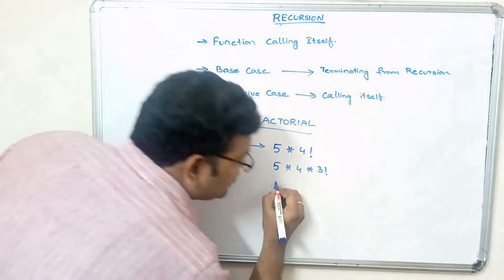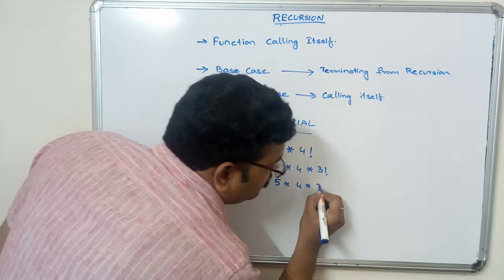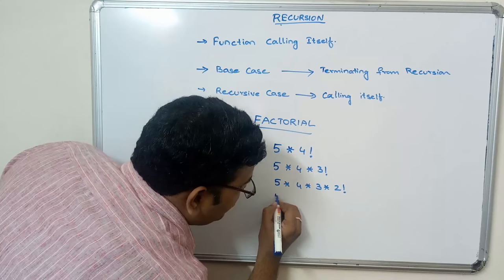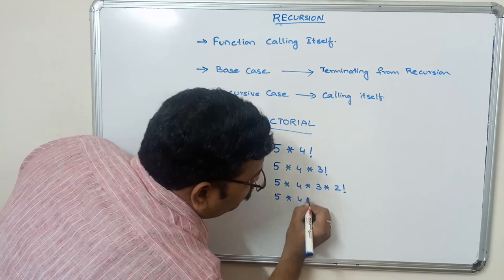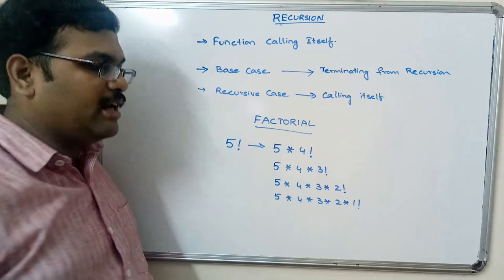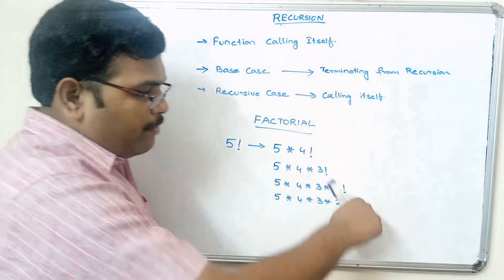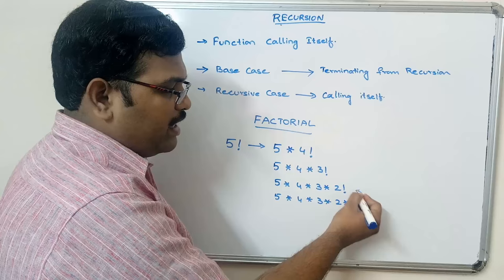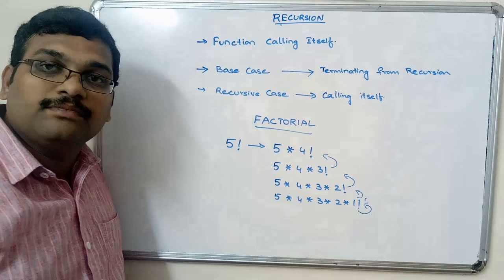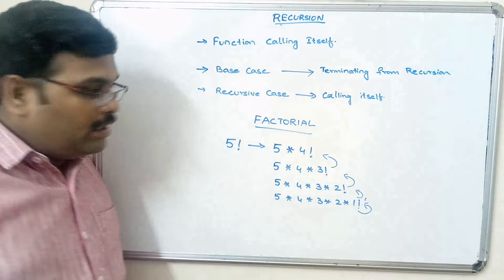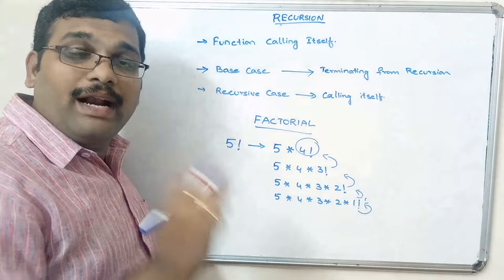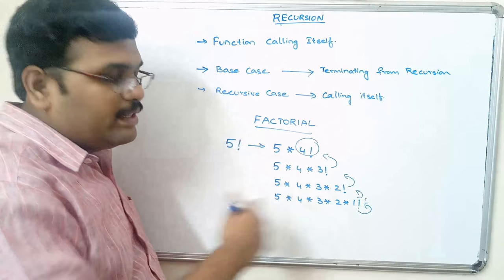We can write it as 5 into 4 into 3 into 2 factorial, and then as 5 into 4 into 3 into 2 into 1 factorial. After a finite number of steps it will return the result. So every time we are applying the factorial, we will write the code just like calling the same function.